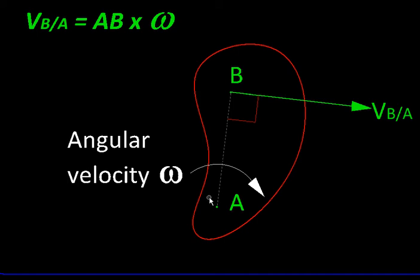Now what about the magnitude? That's easy too. If the distance between A and B is not altering, then B can only move in a circular motion relative to A, and the velocity in circular motion is given by the radius AB multiplied by the angular velocity ω. So velocity of B relative to A is the distance AB multiplied by ω.